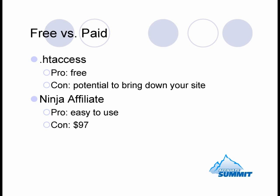Two options I'm going to talk about today: one free and one paid. I use the free version, which is just creating an htaccess file. The paid version is software called Ninja Affiliate. A pro of htaccess files is that it's a free option and you can do it pretty quick and easy. The con is that when you're creating this file, it can be a little finicky — the smallest error in there can take down your entire site.